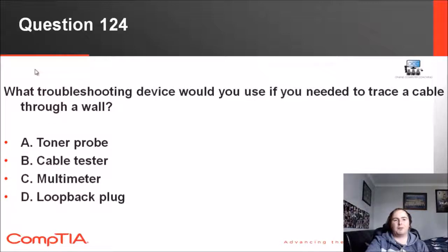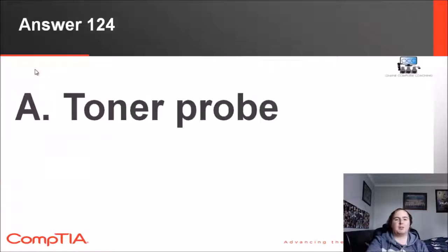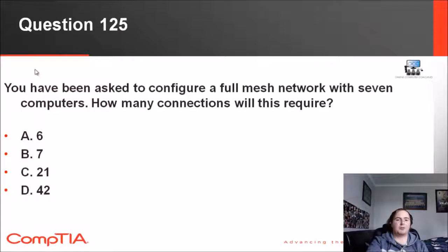124: What troubleshooting device would you use if you needed to trace a cable through the wall? We've got toner probe, cable tester, multimeter, and loopback plug. Loopback plug is more for troubleshooting to see if there's any loopbacks in the network that can crash it. Multimeter is a power device. Cable tester does cable tests from A to B, or if you've got a cryptic cable. It's toner probe. Toner probe is that device where you can trace cables through the wall, as stated in the question.